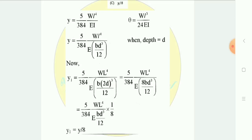So the answer is y/8. When 5/384 × WL⁴/EI equals y, and we substitute D = 2D into I = BD³/12, the result simplifies to y1 = y/8. The answer is confirmed as y by 8.